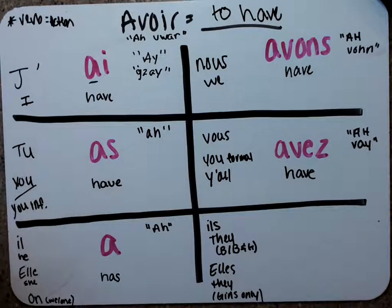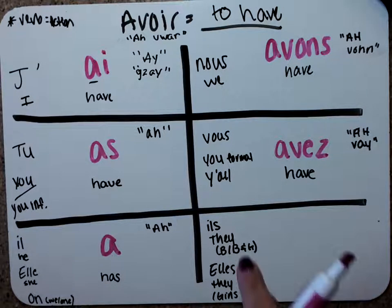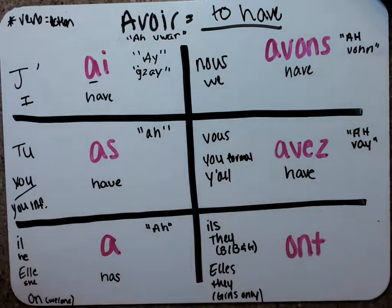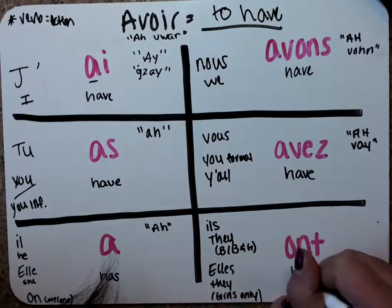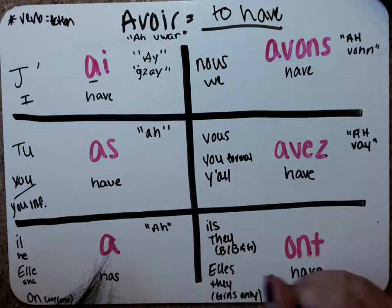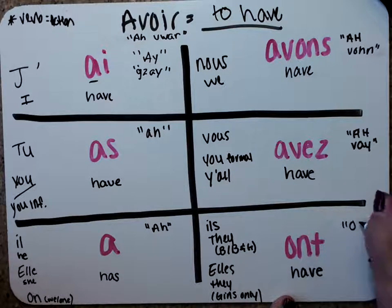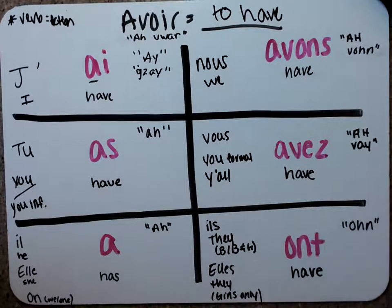Alright. And last one on here is ils and elles, plural. And so ils and elles, plural, the they's, they get ont. And so this means have. So they have, et cetera, et cetera. And so this is like oh.